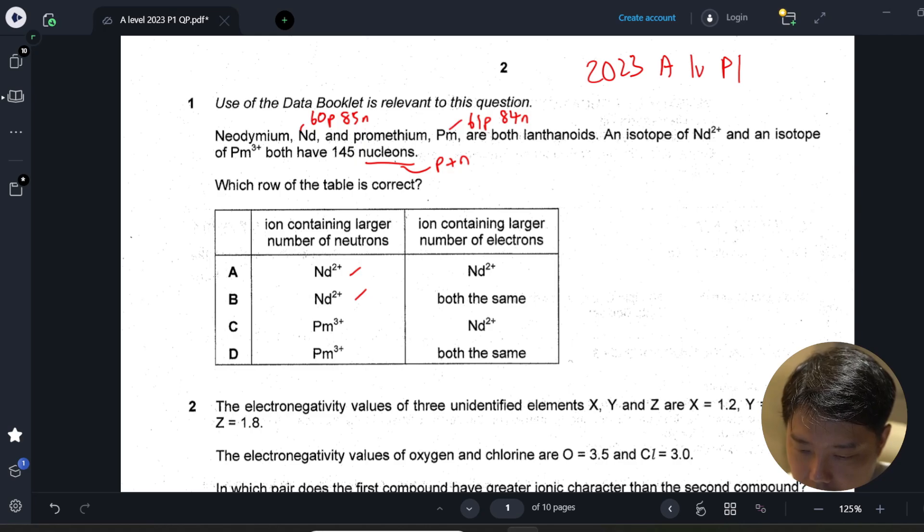Prometium has 61, but because this is a 2+ it has 58 electrons. Prometium has 3+ so it should also have 58 electrons. Both have the same number of electrons, and the answer is B.